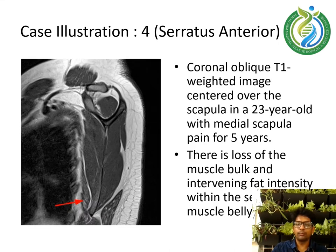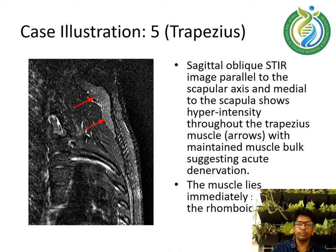Case illustration 4: coronal oblique T1-weighted image centered over the scapula in a 23-year-old with medial scapula pain for 5 years. There is loss of muscle bulk and intervening fat intensity within the serratus anterior muscle belly, represented with the arrow. Case illustration 5: sagittal oblique T1-weighted image parallel to the scapula axis, medial to the scapula, shows hyperintensity throughout the trapezius.